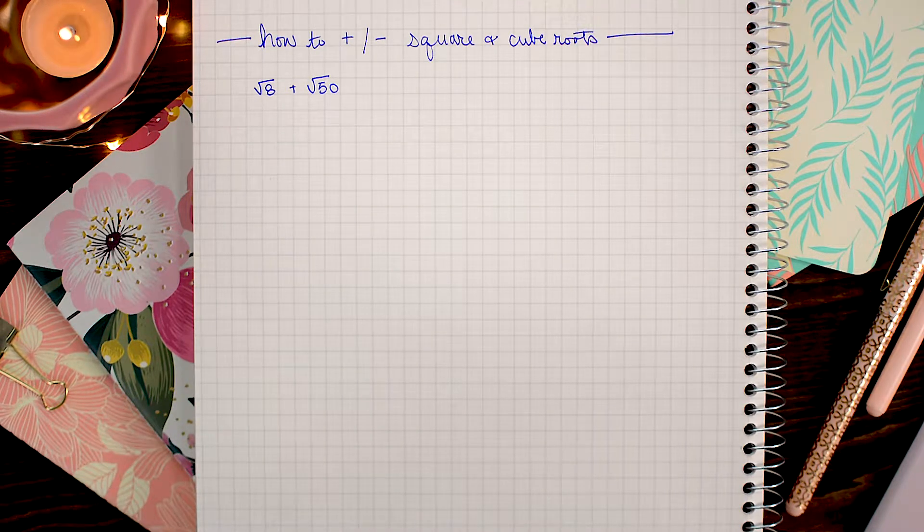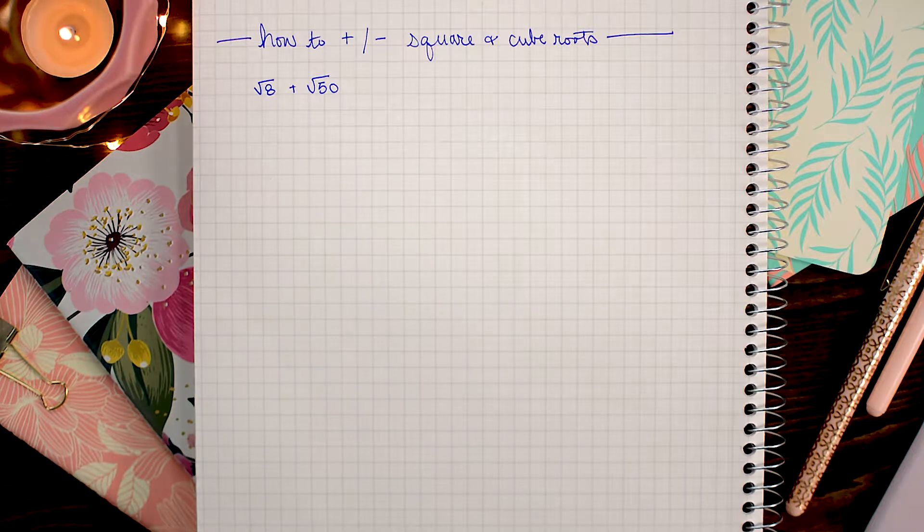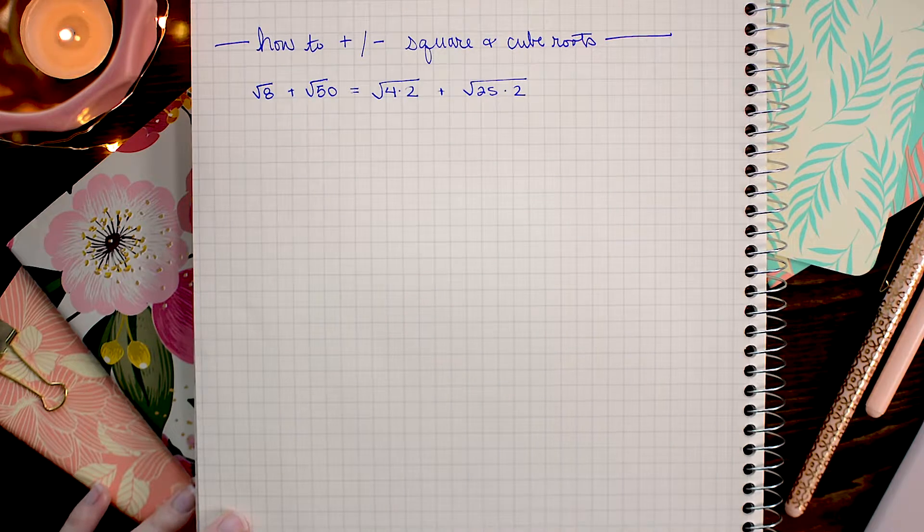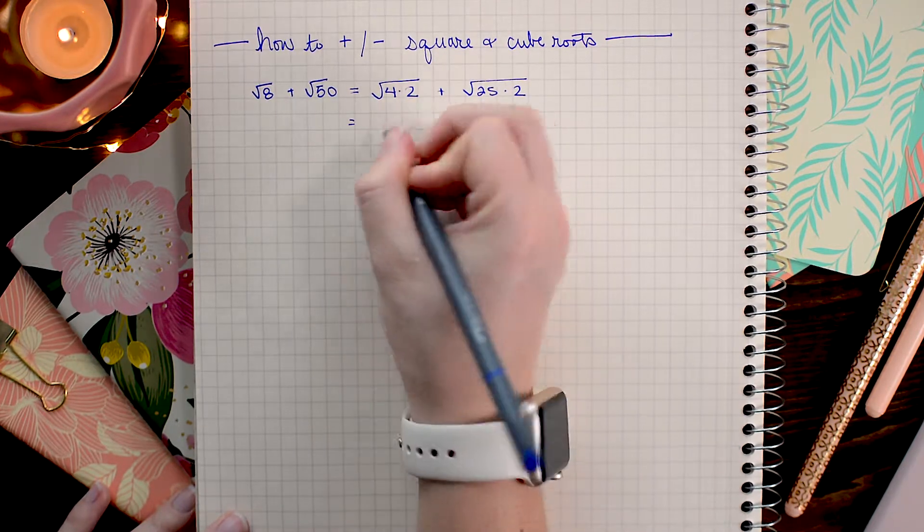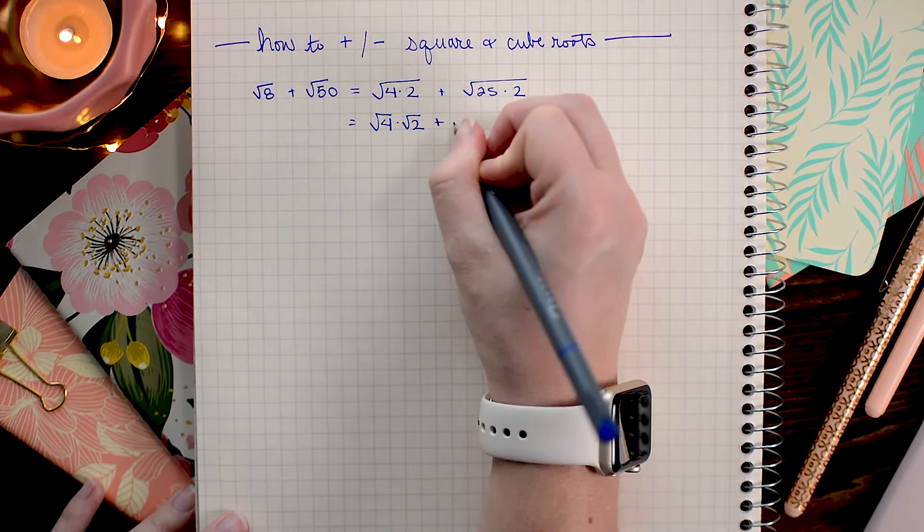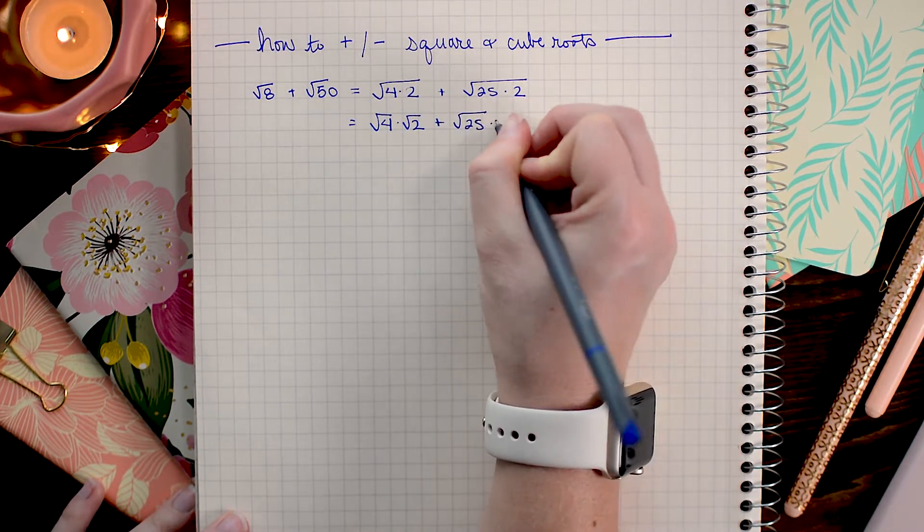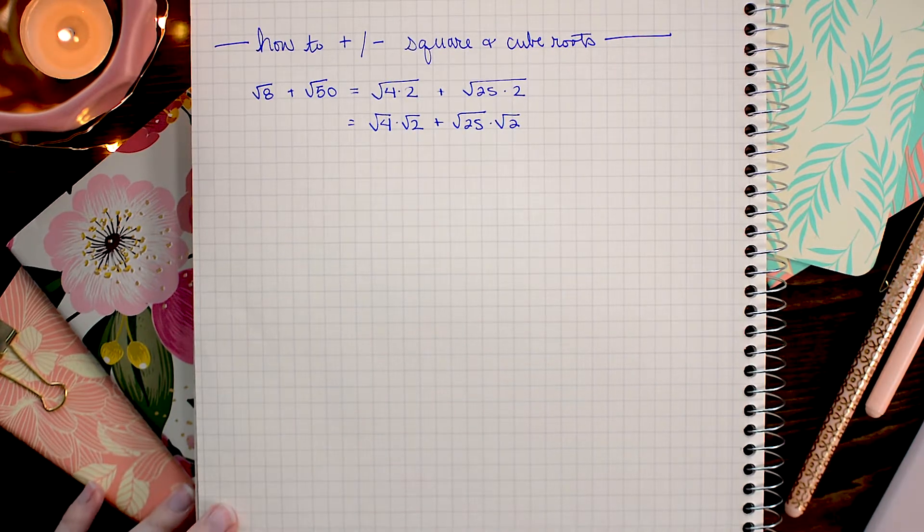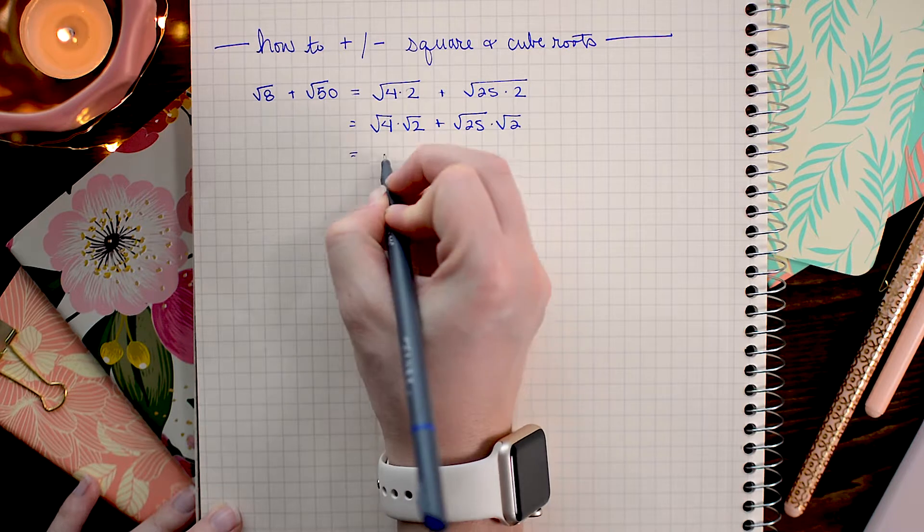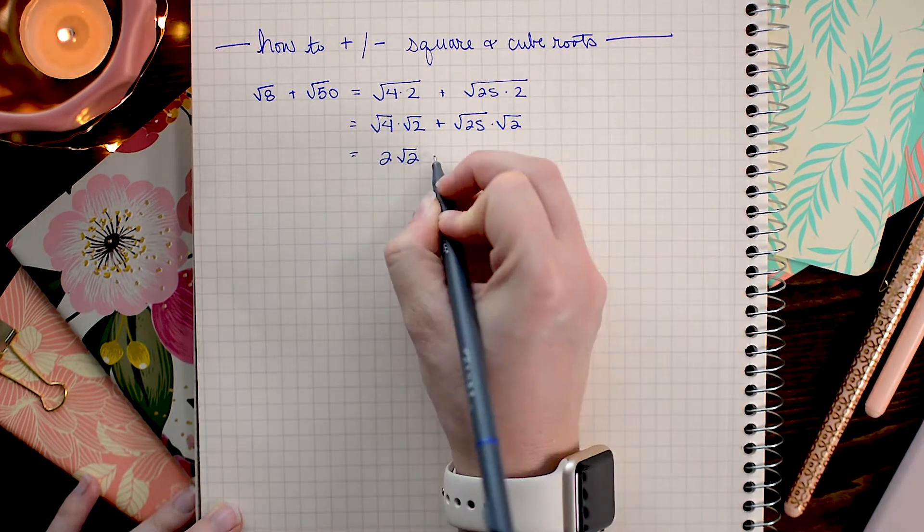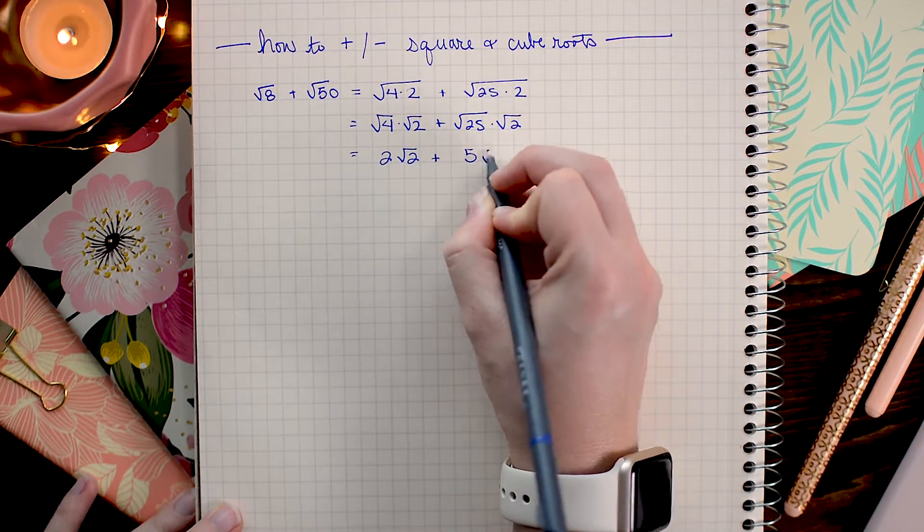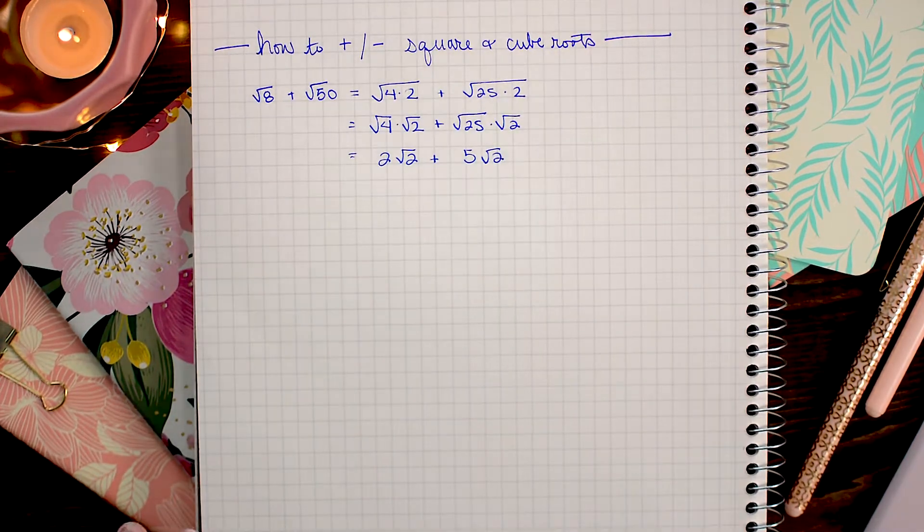Let's start by pulling out any perfect squares that are factors. Now I'm going to choose to just break those into two separate roots on each of these. That just makes it a little more obvious what is going on when we want to simplify. Now we can see that the square root of 4 is 2, so this is the same as 2 square root 2. And the square root of 25 is 5, so I have 5 square root 2.